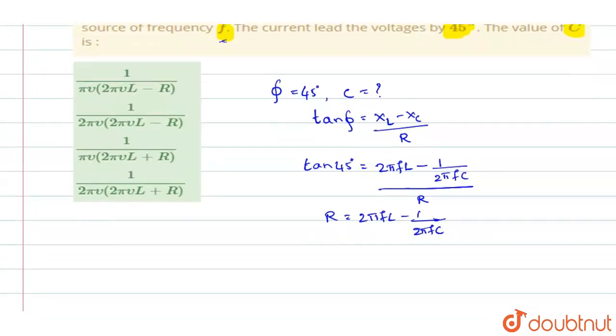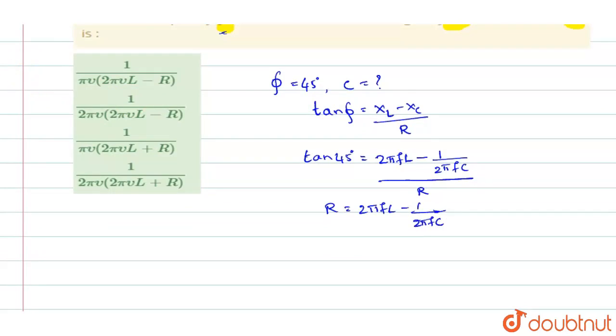And in this case, when you are simplifying things, finally you will take 2 pi F as a common factor between them. And when you do all such things, you will get the value of C. C will be equal to 1 over 2 pi F into 2 pi FL plus R. So this is the value of C you will get.